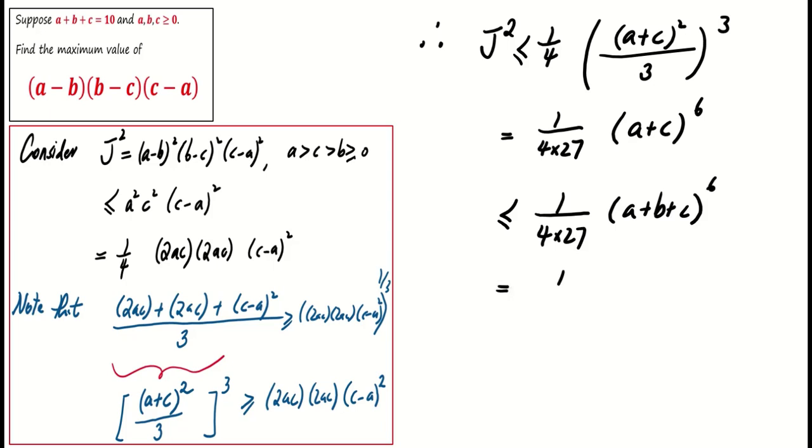Now, substituting a plus b plus c equals 10, we find that J is at most 1000 over 6 square root of 6, which is approximately 96.225.